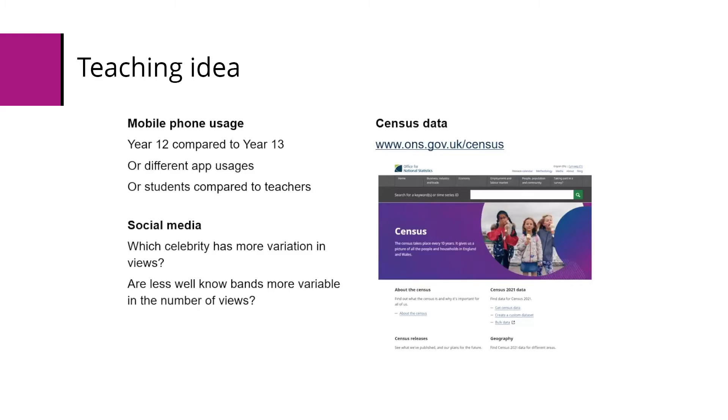A further option is to compare the Office for National Statistics census data. It's very customizable and students are often interested in finding out and using data about the area they live in. You can get health data or employment data. You'll have to do a bit of digging to find the information there, but there is plenty of information and students do like finding out about where they live.